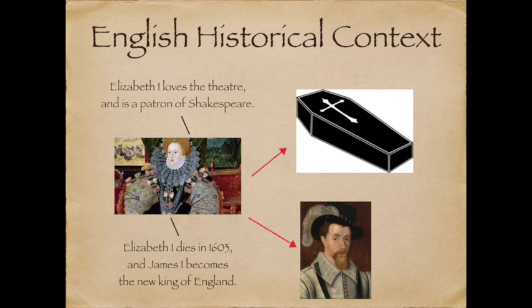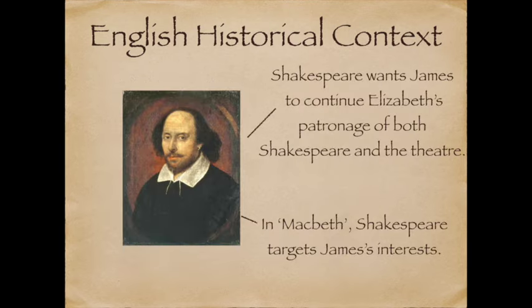When Elizabeth died in 1603, James I became the new King of England. But Shakespeare wasn't sure whether James I was going to offer the same protection to himself and to the theatre, so he wanted James to continue Elizabeth's patronage. In Macbeth, Shakespeare targets James' interests.